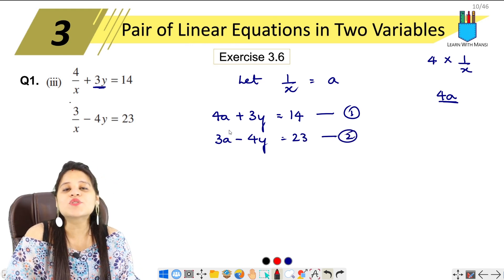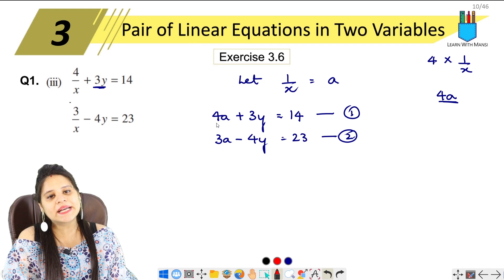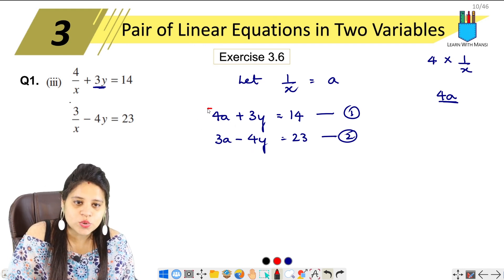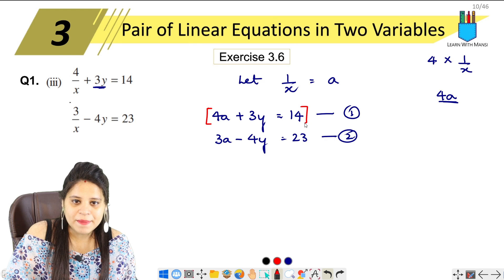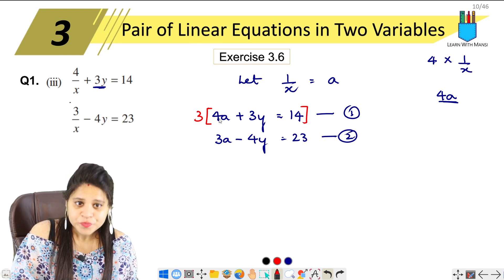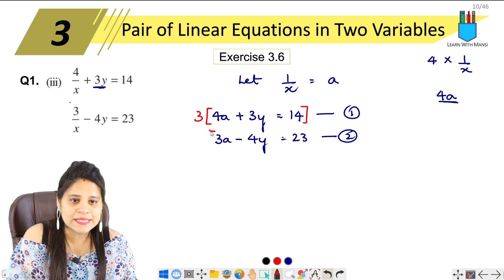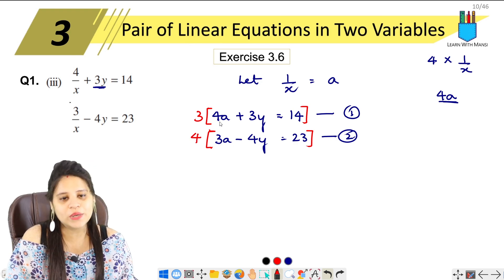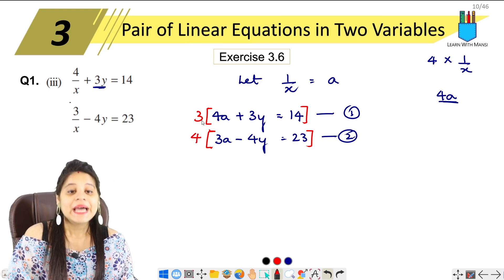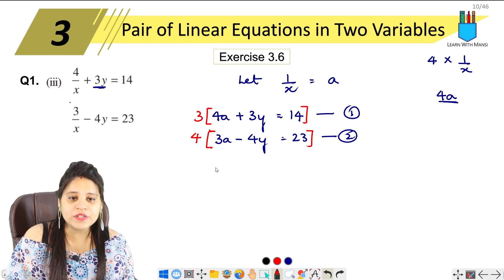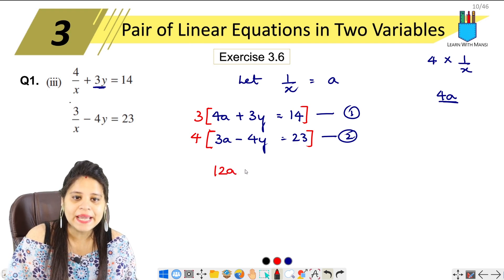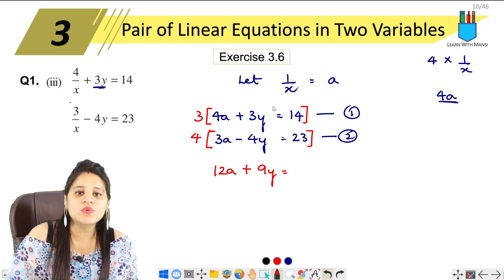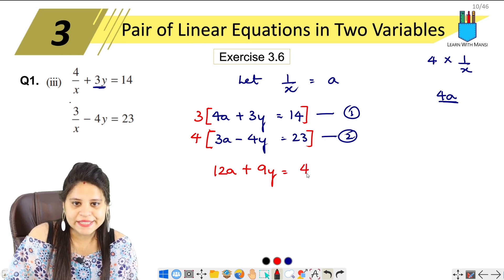Now if we have to solve it here, if we have to do elimination, what do we need to multiply both? So if I multiply by 3, 4 threes are 12. Similarly, if I multiply by 4, so 4 threes are 12. Now 3 into 4, 4 threes are 12a plus 3 threes are 9y equals to 14 into 3, 42.